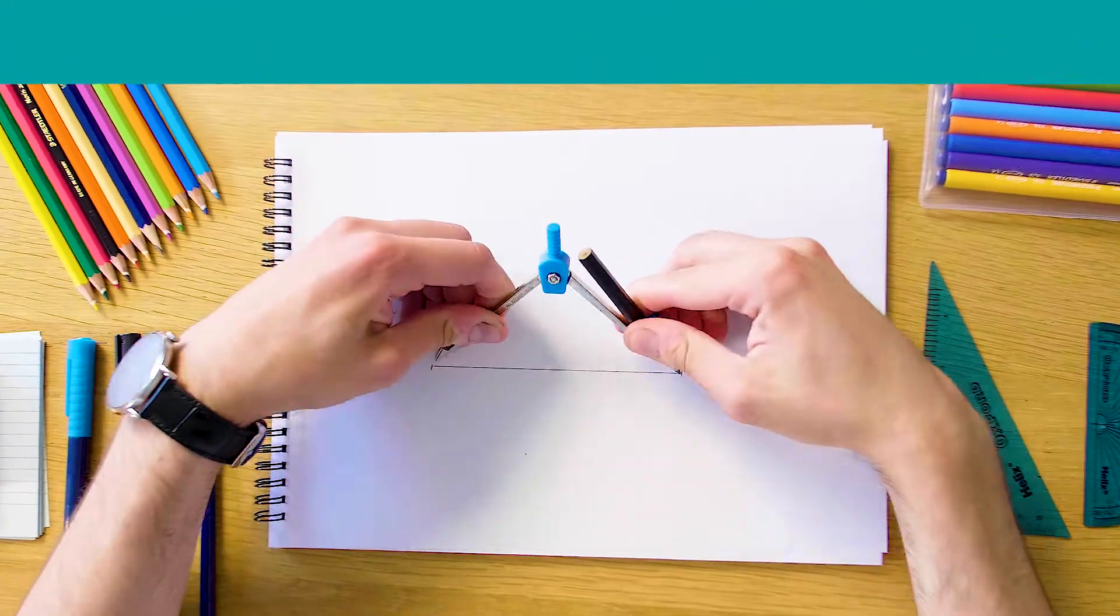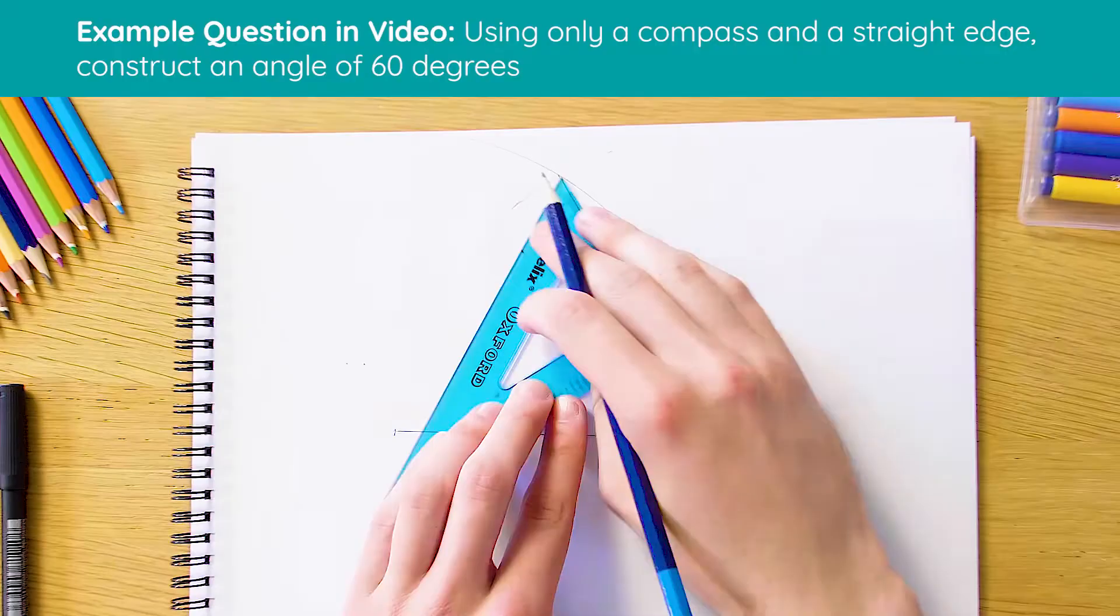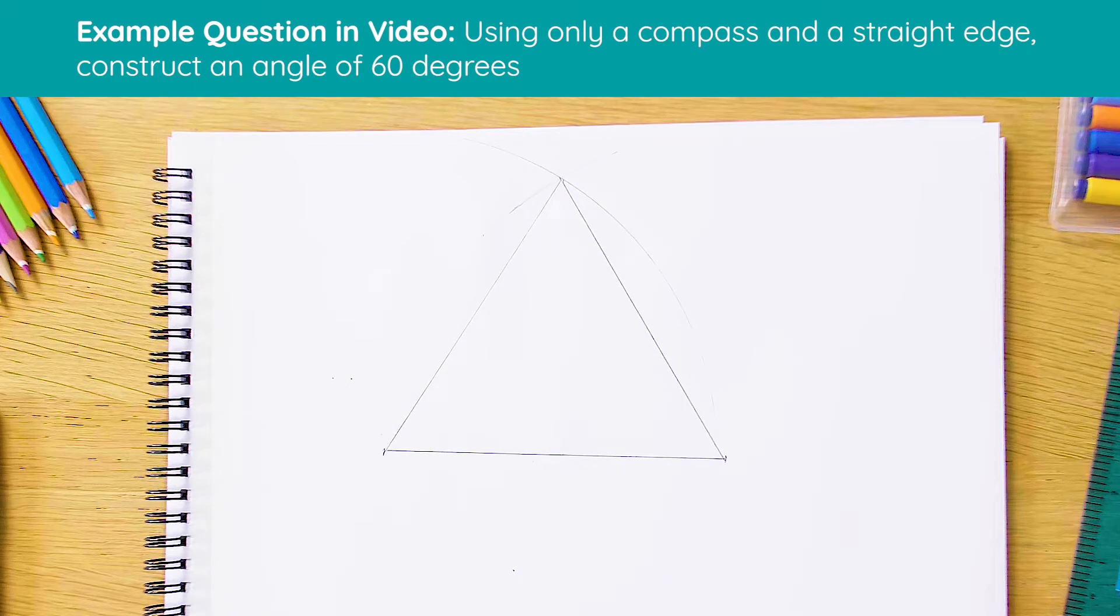Okay, so here's our fully constructed triangle. And although we're just looking for one 60 degree angle here, as we can see, all three are equal to 60 degrees. So let's see how this works.